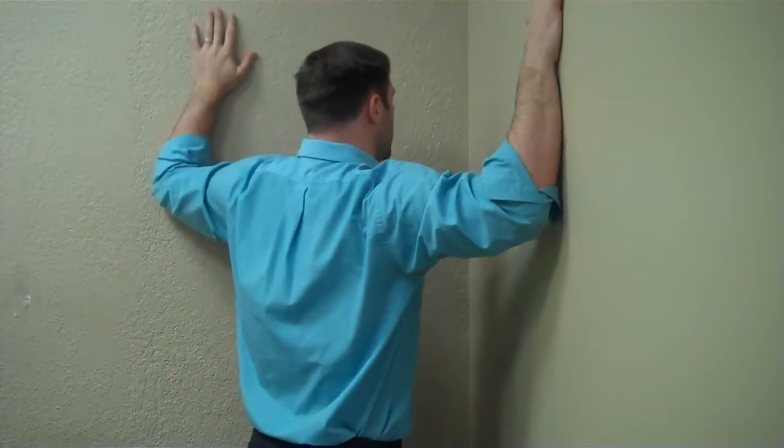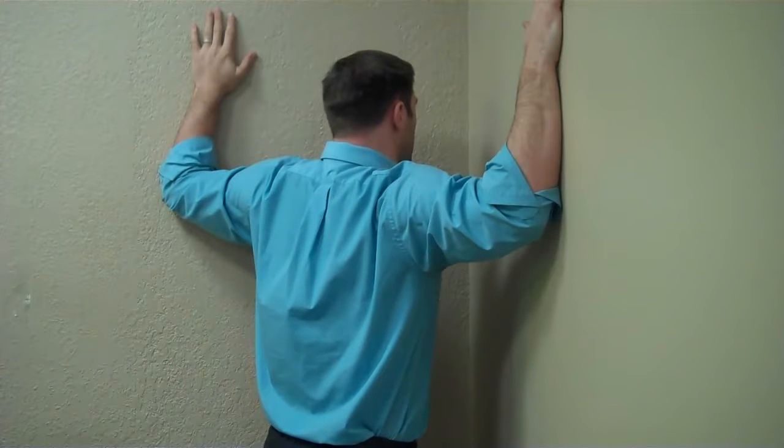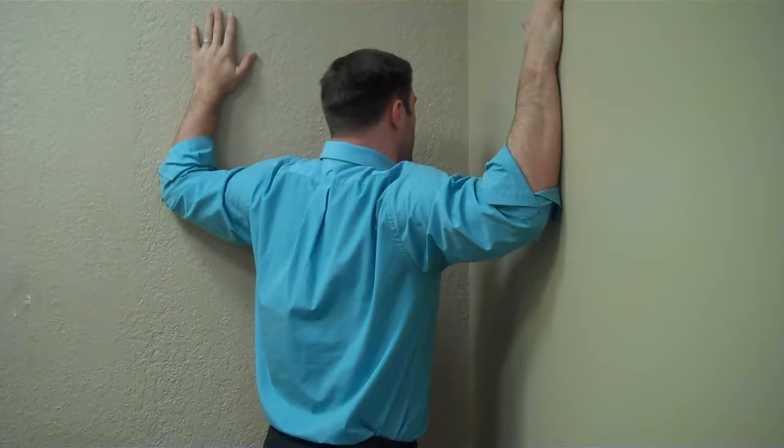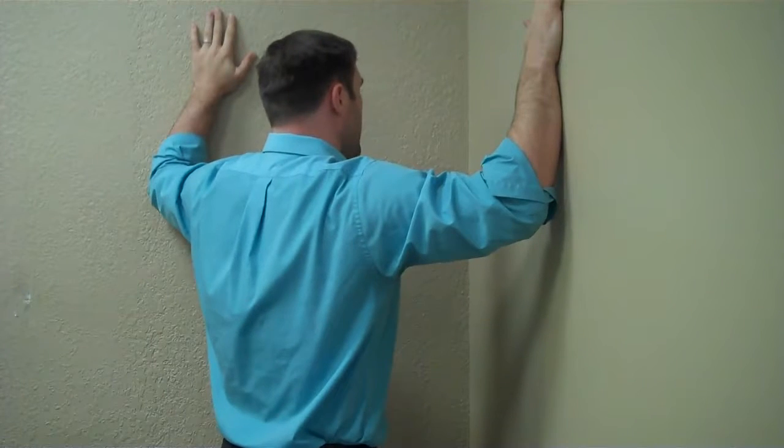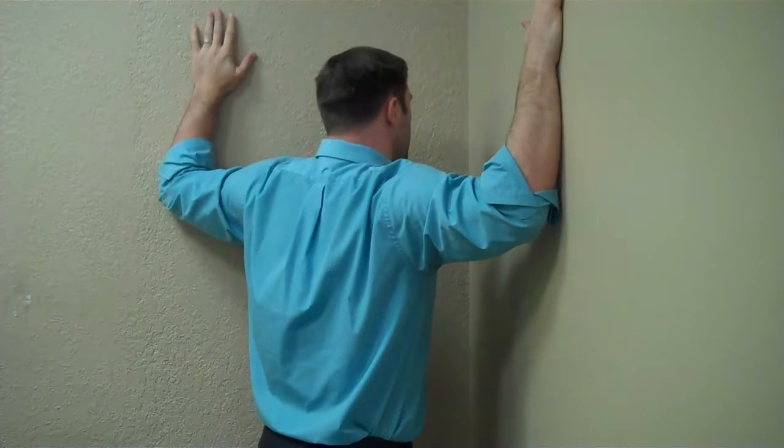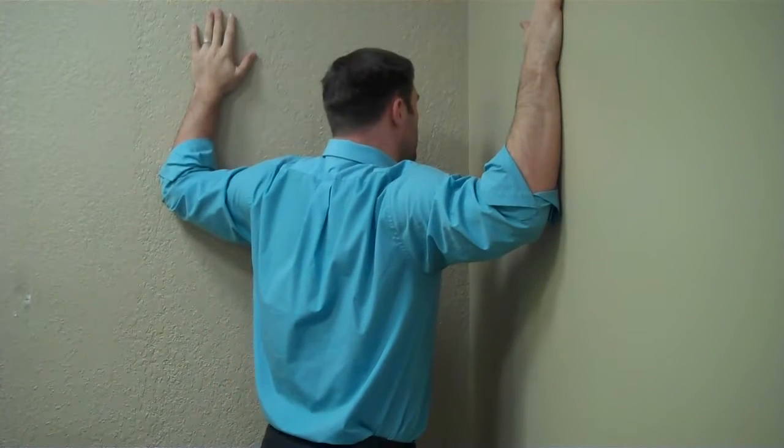And what you're going to do is for the first one, there's three different positions for this stretch. You're going to look straight forward and all you're going to do is lean straight into the corner and you're going to get a stretch in there for about four or five seconds. And then you're going to come back and relax and then do it again. So this one, your head is in a neutral position.